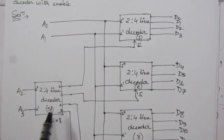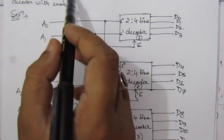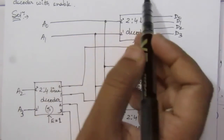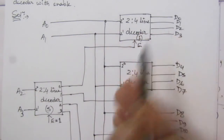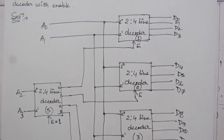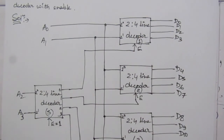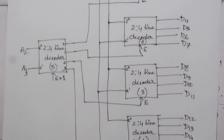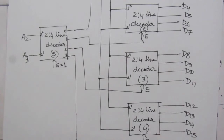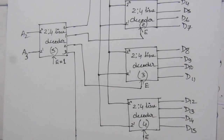This is the block diagram of a 4-to-16 line decoder using five 2-to-4 line decoders with enable input. Thank you for watching. If you have any question, please put it in the comment section below. Also like, share, and subscribe to my channel.